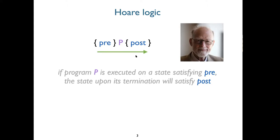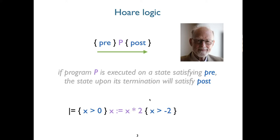To give an example of a valid triple under this interpretation: I have a simple program that takes some variable x and doubles it. Surely, if you execute this on a state where x is positive, then when it terminates, x will be larger than minus two. I'd highlight that this postcondition is over-approximating the post-states — it also characterizes states you wouldn't reach, for example, x having the value of minus one, since it's positive in the beginning.